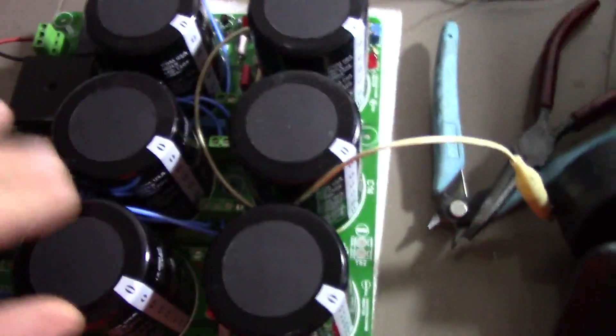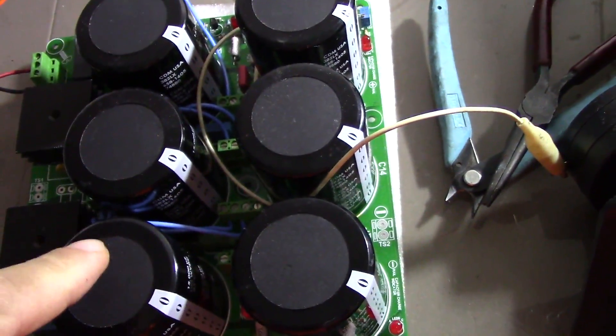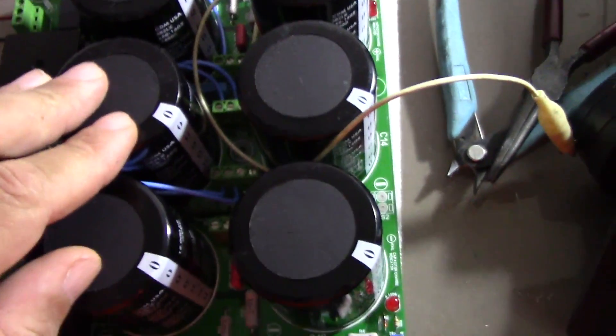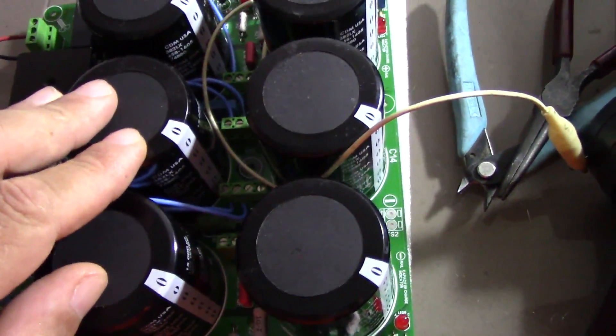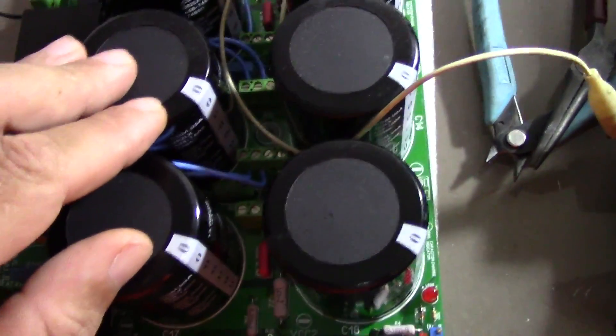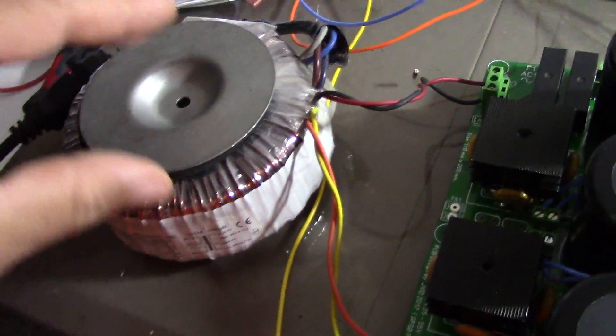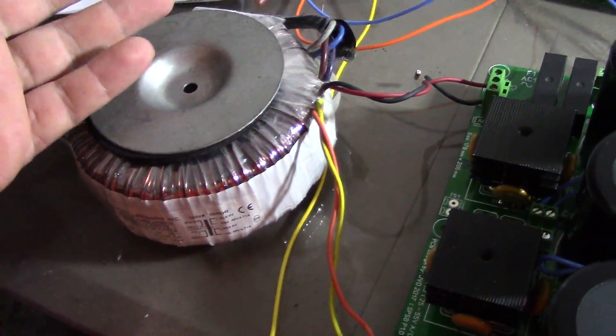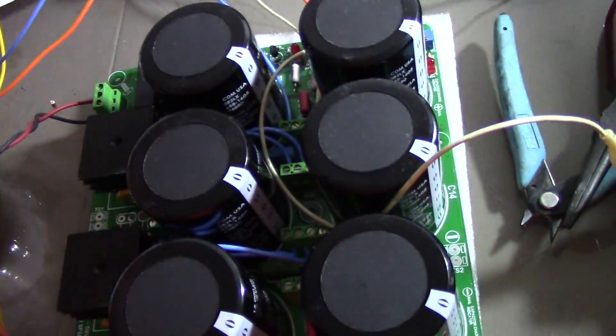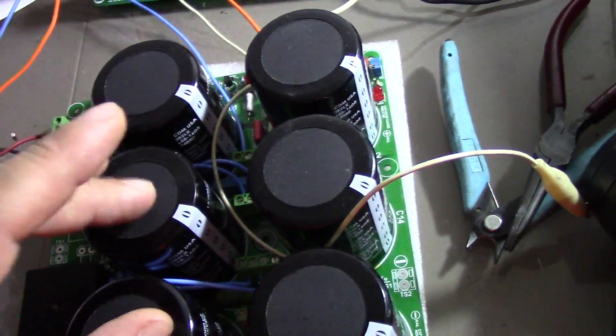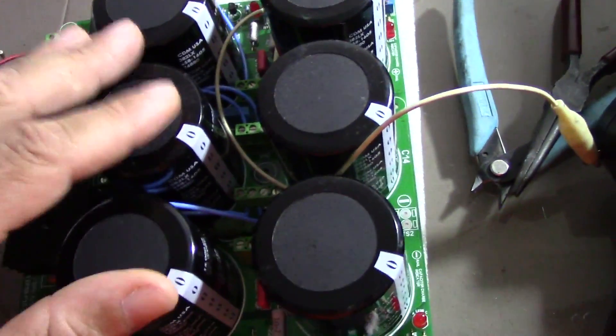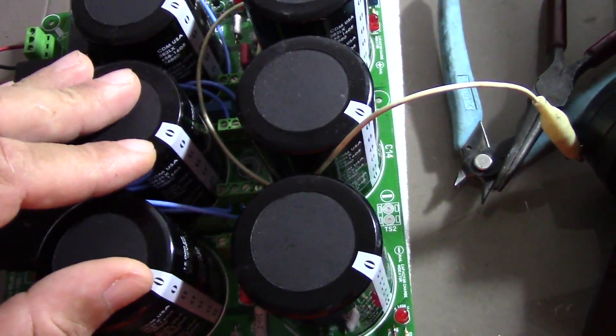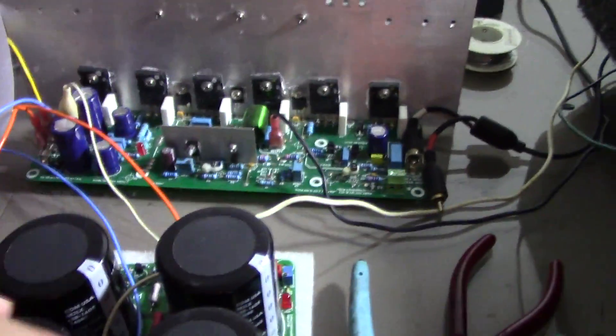I think we can lower that value even more, but I'm gonna leave it at 5.6k. I think that's fine because I don't have a really strong power transformer. This one has two windings of 35 volt AC that will give me about 50 to 52 volt DC on the power supply. I would like to have a little bit more, maybe 60 to 65 volt DC for the Honey Badger.